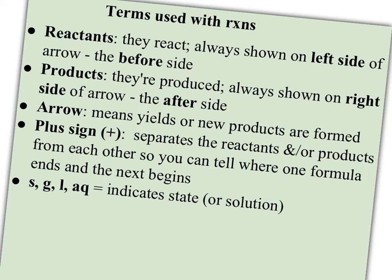A plus sign, whether it's on the reactant or product side, is just separating your reactants and products from each other, so you can tell where one formula ends and the next begins. The other thing that's commonly used in chemical reactions are the symbols S, G, L, and AQ. It's used in parentheses after a formula or symbol, and it just indicates if something is a solid, gas, or liquid. Or in the case of AQ, it means it's dissolved in water or is a solution.